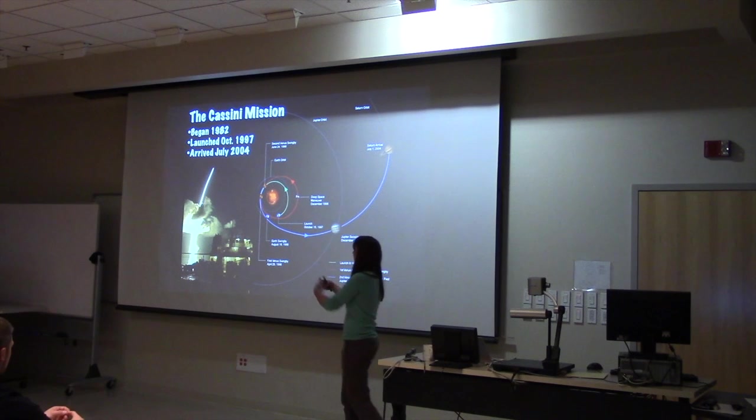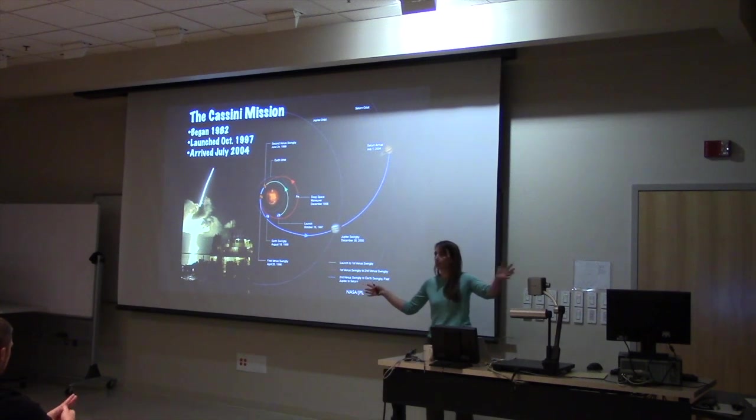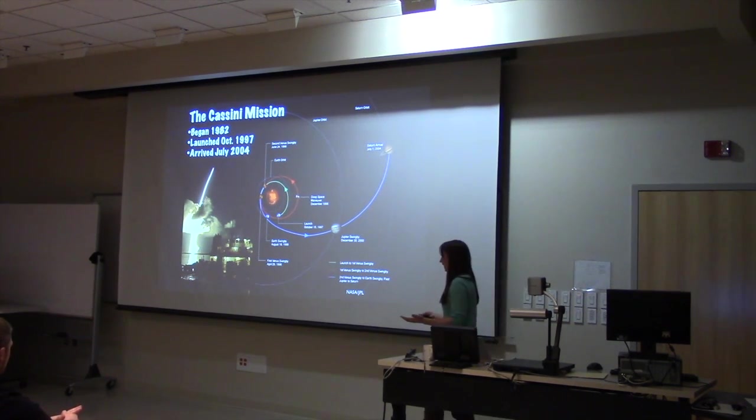This launch shown here is actually quite controversial because you can see it's going to go out to the outer solar system, where solar panels that you typically see on spacecraft aren't a very efficient source of power because you're so far from the sun. So it is actually powered by a thermoelectric device that drives energy from the radioactive decay of plutonium.